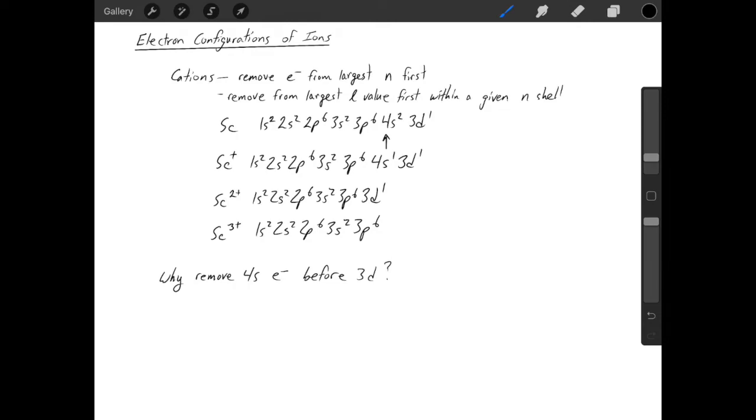So the reason we remove the 4s electron before the 3d, even though visually that might seem kind of counterintuitive, is that the energies of these orbitals can be really close together. And the energy ordering can change slightly when certain orbitals are filled and certain nuclear charges are present. Quantifying those changes is complex and it's beyond the scope of this course. But it's important to recognize that the energy level positioning of these orbitals is going to be different when there are electrons present and when they're not present.